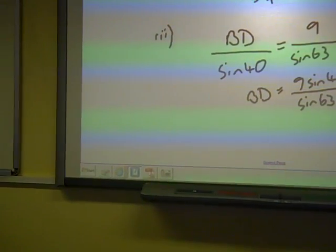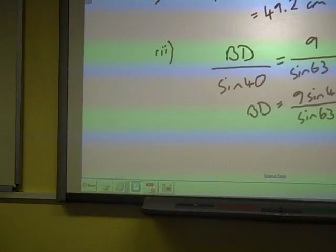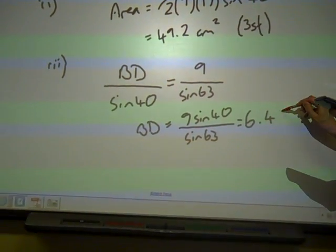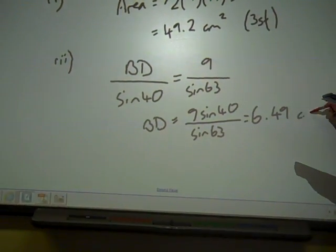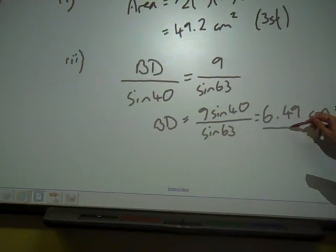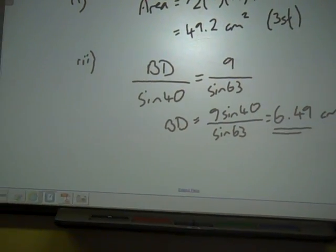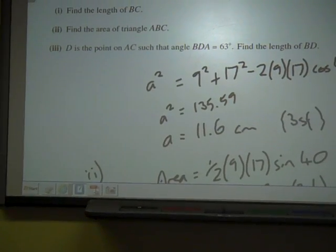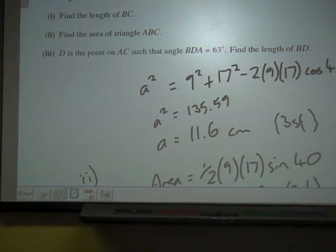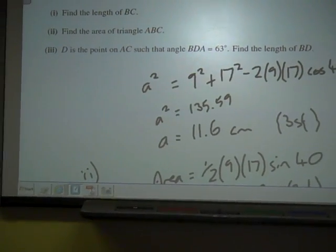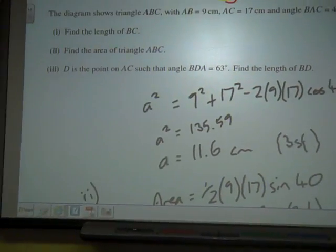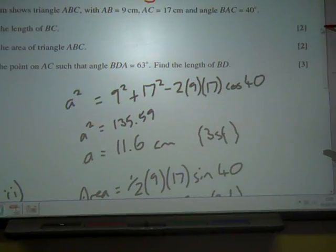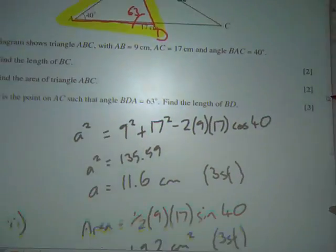Rearranging: 9 sine 40 over sine 63, and we get 6.49 centimetres. Does that feel reasonable? Yeah, it probably does — we had BC as 11.6, and BD is shorter, which makes sense.